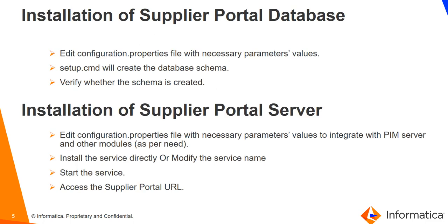Regarding the first part, which is installation of the Supplier Portal Database, we have to go to the corresponding configuration.properties file of the installer and change a few necessary configuration parameter values related to the database. Then we have to run the setup.cmd file to create the database schema and verify whether the schema is created or not.